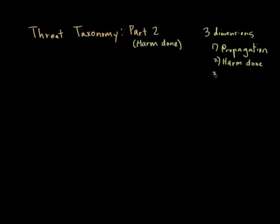And then the final category, which we'll talk about in a future video, will be the category of how that threat stays resilient on the system — so resiliency. Now, bear in mind that these three dimensions are convenient ways to think about threats, but you may think of other ways to taxonomize them. This is just one way to organize how we discuss threats.